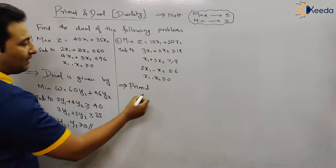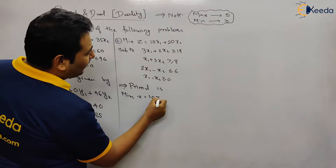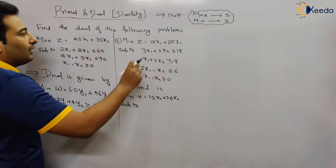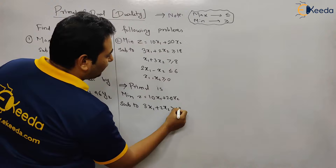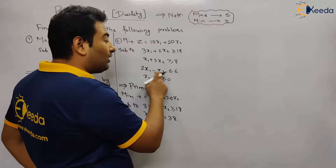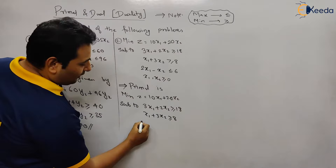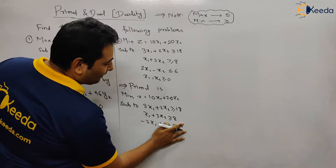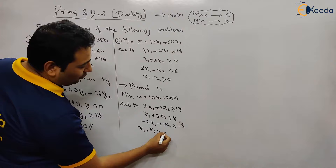So the primal is: minimize Z = 10x1 + 20x2, subject to the constraints. The first constraint is correct, so keep it as it is. The second constraint is also correct, keep it as it is. The third constraint has a problem — since it is minimized, all constraints should be greater than or equal to. Therefore, multiply the third constraint by minus one to convert it: −2x1 + x2 ≥ −6. Finally, x1, x2 ≥ 0. Now the primal is ready and can be converted into dual.